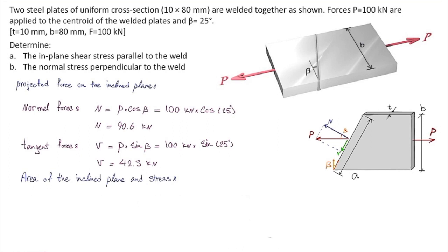In order to determine stress we need to divide forces by area. But what is the area? Area is going to be the thickness multiplied by the length of that inclined line. So A is going to be A multiplied by T. We can use the trigonometric equation: A is going to be B divided by cosine of beta.